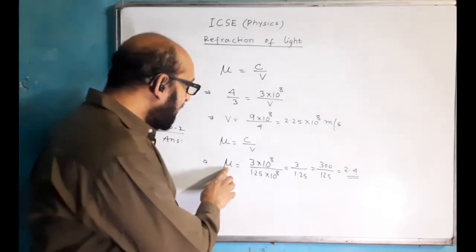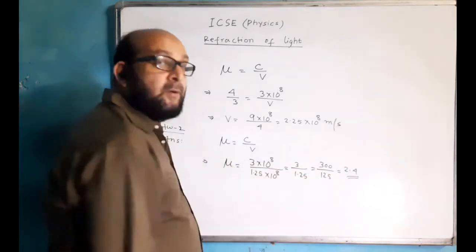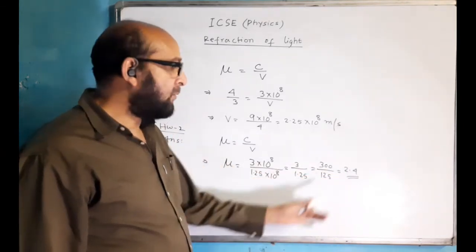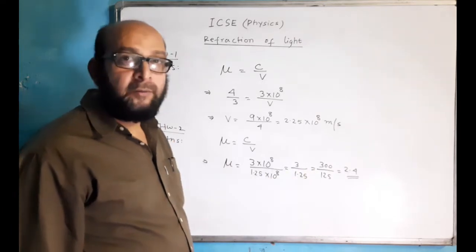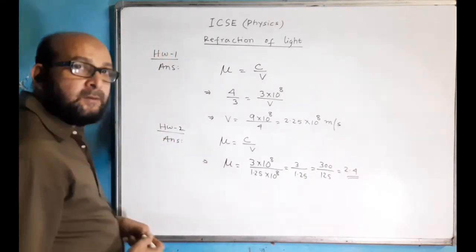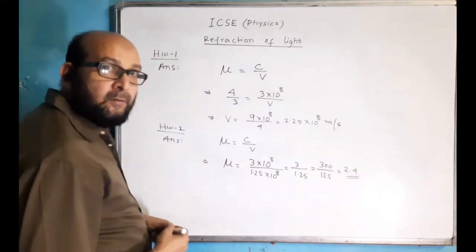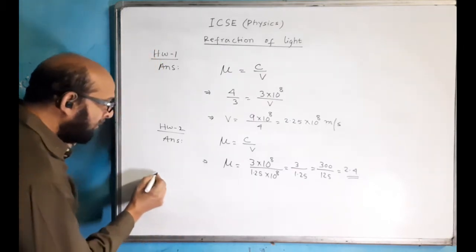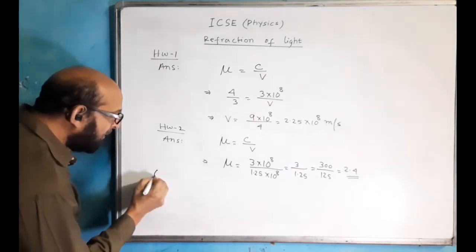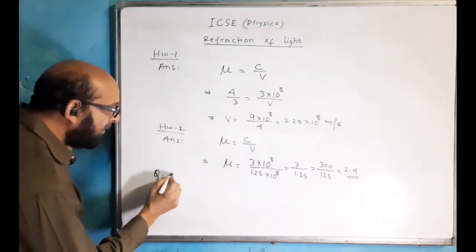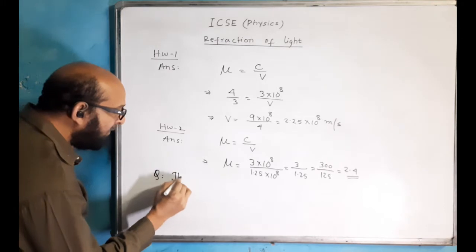Mu has no unit because it is a pure ratio, so don't give any unit for it. This is the solution for the second question of your homework. Now sometimes they may give a question like this.